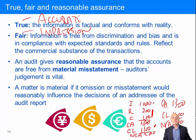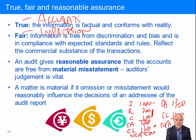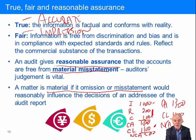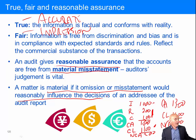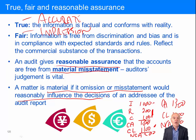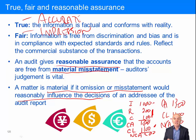An audit gives reasonable assurance that the financial statements are free of material misstatements — remember, it's reasonable assurance, there's no guarantee. A matter is material if its omission or misstatement would reasonably influence the decisions of an addressee of the audit report — typically a member of the company, a shareholder. A matter isn't really material if it's wrong but not so wrong that it's going to make you buy or sell shares when you shouldn't.